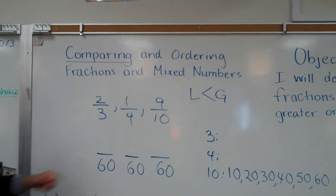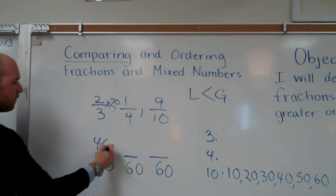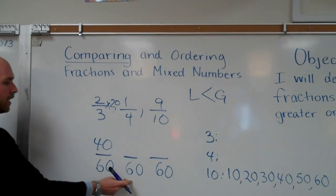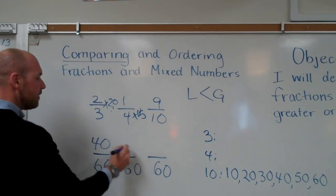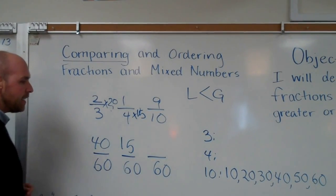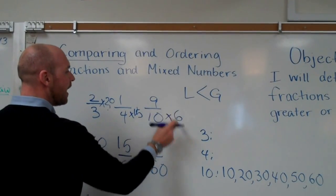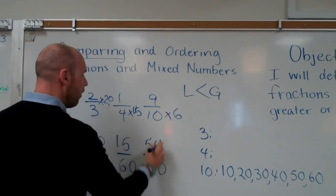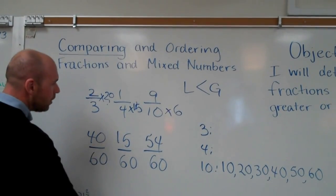So I've got sixty, sixty, and sixty. How do I get from three to sixty? Times twenty. Two times twenty is forty. How do I get from four to sixty? Times fifteen. One times fifteen is fifteen. How do I get from ten to sixty? Times six. Nine times six is fifty-four. Now can I place these in least to greatest order? I sure can.